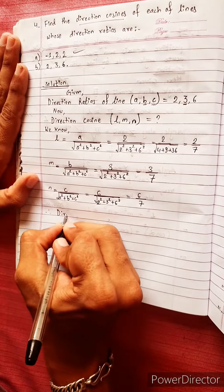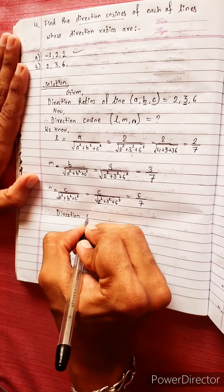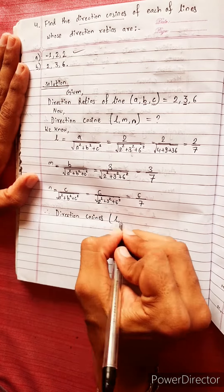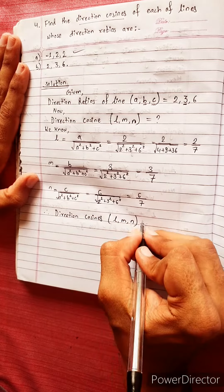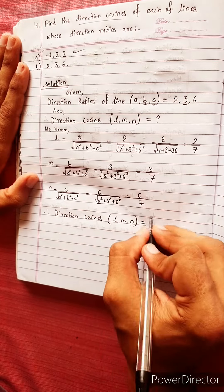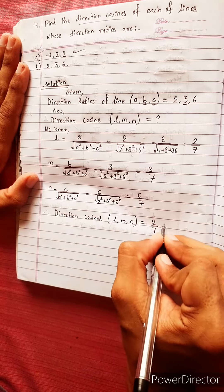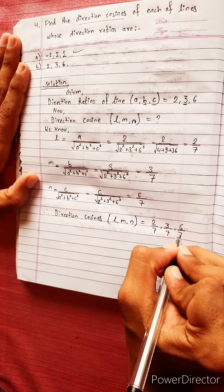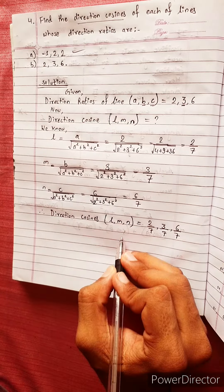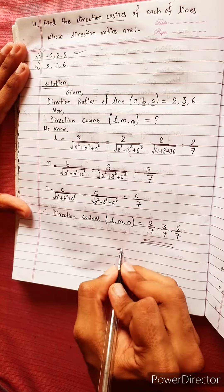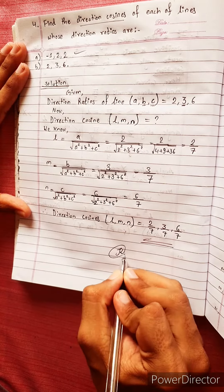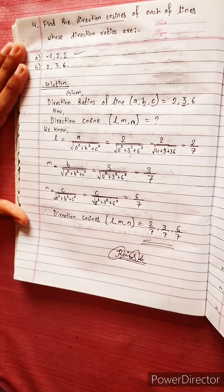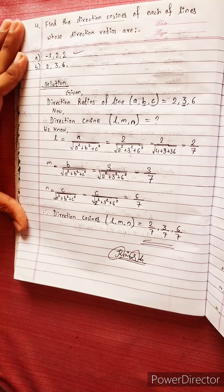Therefore, the direction cosines — the position with respect to 3-dimensional space — equal 2 by 7, comma 3 by 7, comma 6 by 7. This is the right answer. Bye bye and thank you.